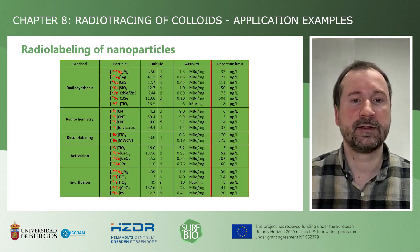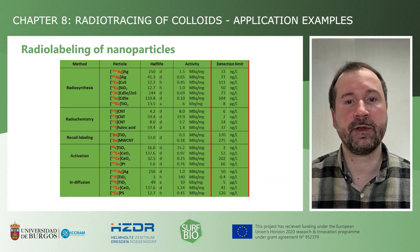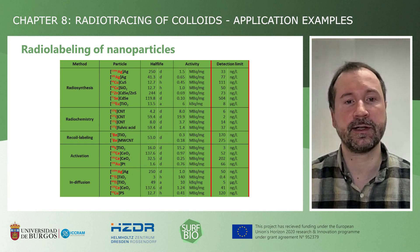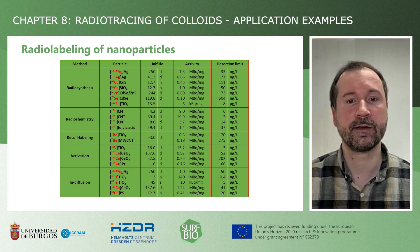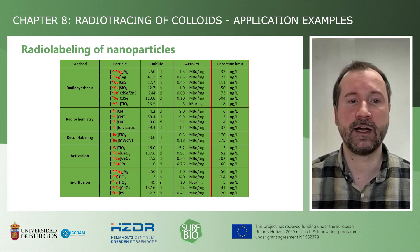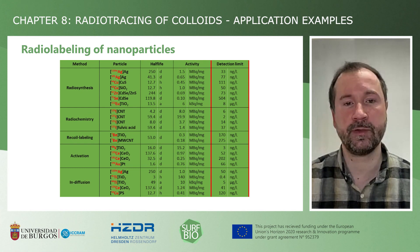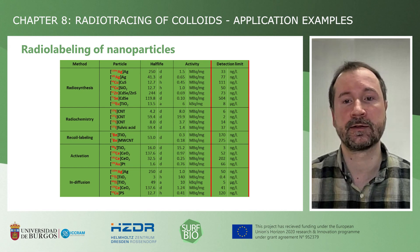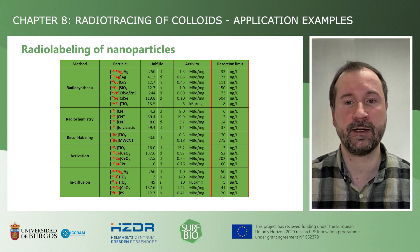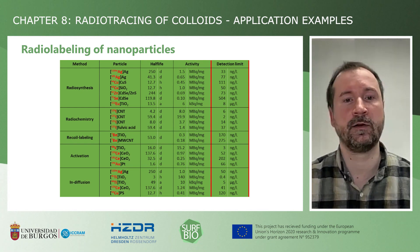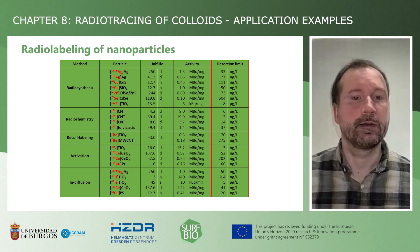Using the different methods, we have radiolabelled the most common manufactured nanoparticles, such as silver, titania, ceria, carbon nanotubes, and quantum dots. These labeled particles can be reliably detected without complicated sample preparation in the environmentally relevant concentration range of nanograms per liter, even against high elemental or particle backgrounds.